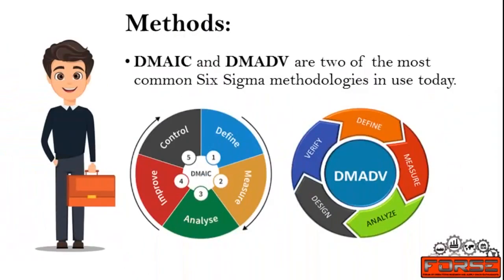Let us look at the methods. DMAIC and DMADV are two of the most common Six Sigma methodologies in use today. DMAIC involves Define, Measure, Analyze, Improve, and Control phases, whereas DMADV involves Define, Measure, Analyze, Design, and Verify phases. DMAIC is used on a product or process that already exists but is no longer meeting customer needs and/or specifications. DMADV is associated with new services and product designs; it may not always work with existing products and processes. When there is no existing product, DMADV can be implemented to design the product or process.